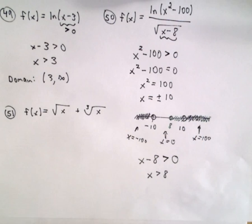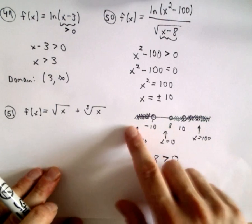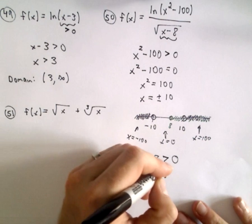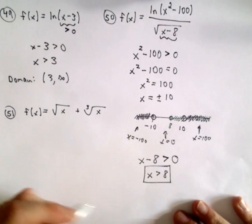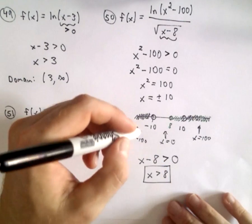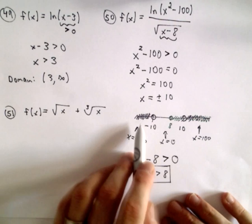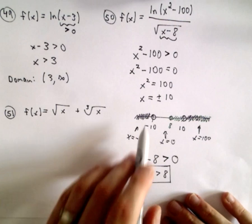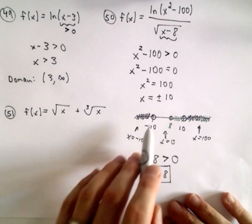Now, what you're looking for for the domain, if you imagine making a number line, you're looking for the overlap of those two regions. I'm looking for numbers that are greater than eight and also satisfy the domain for the logarithm.